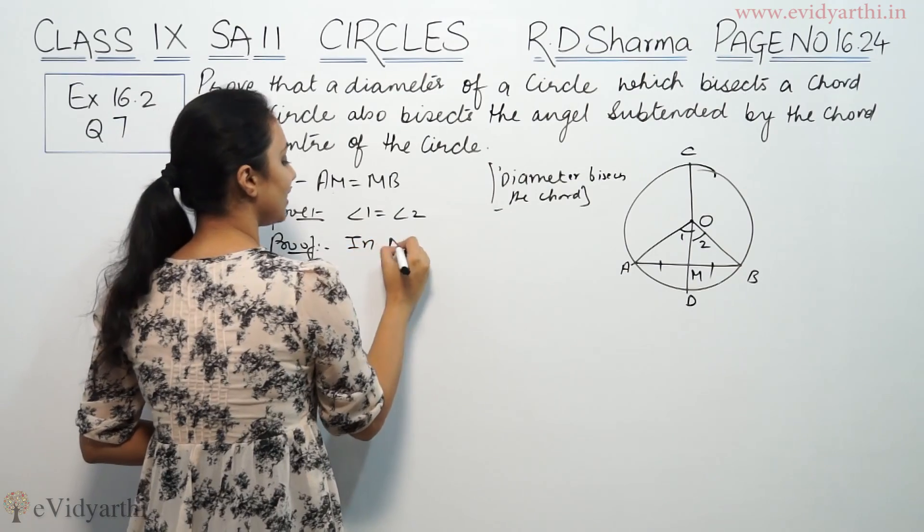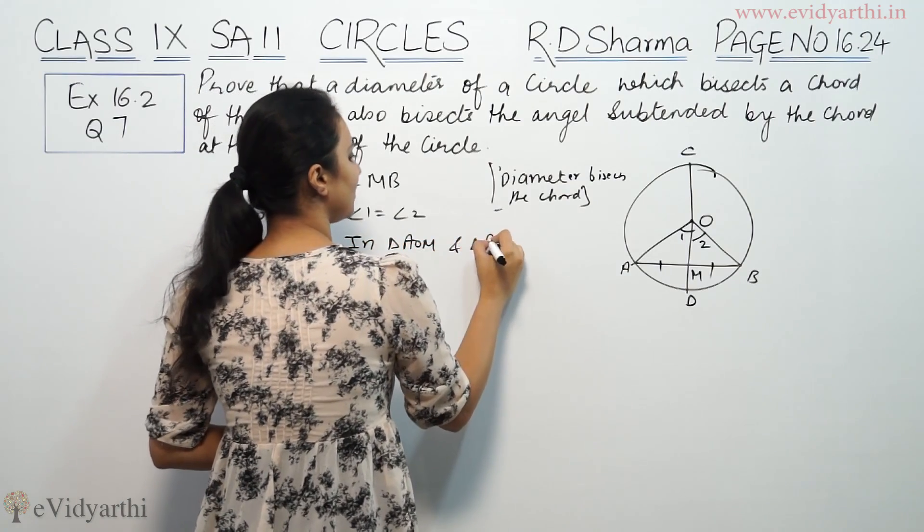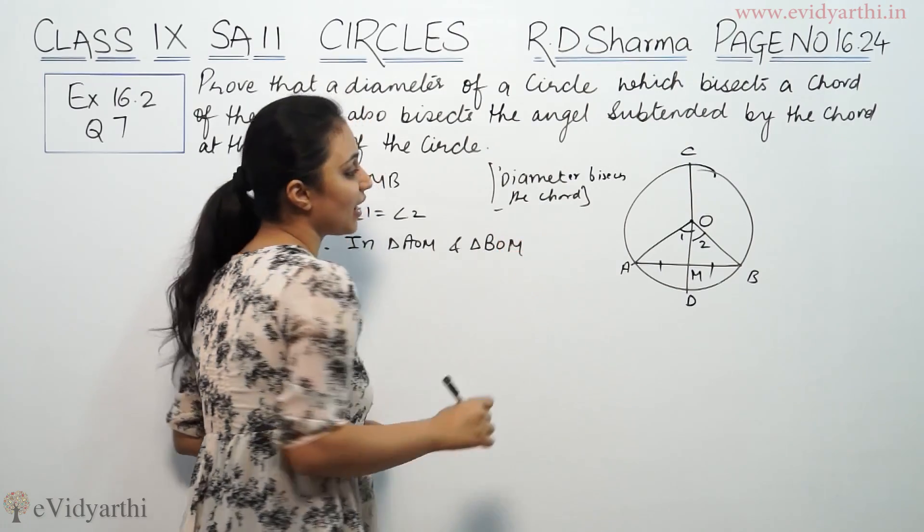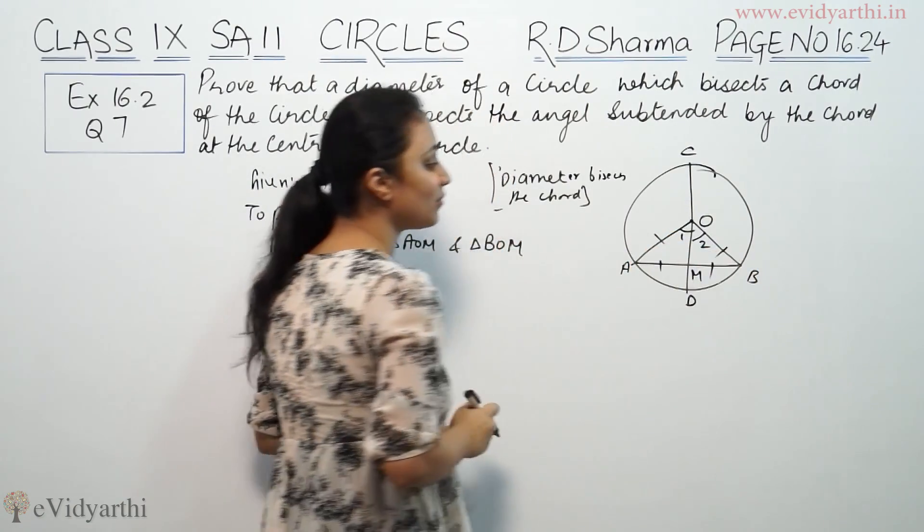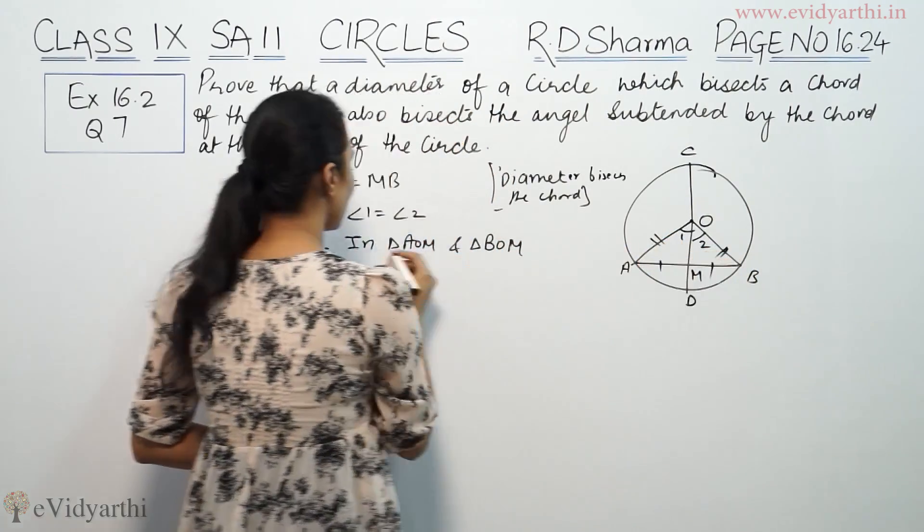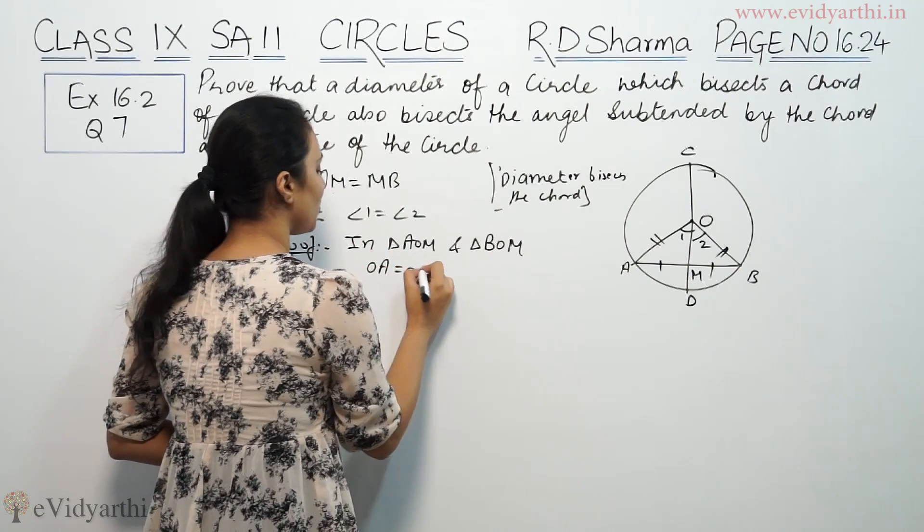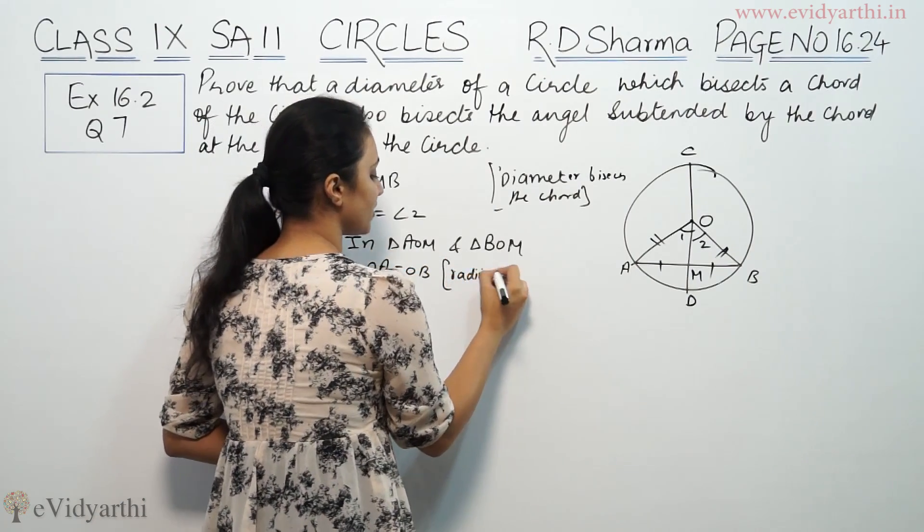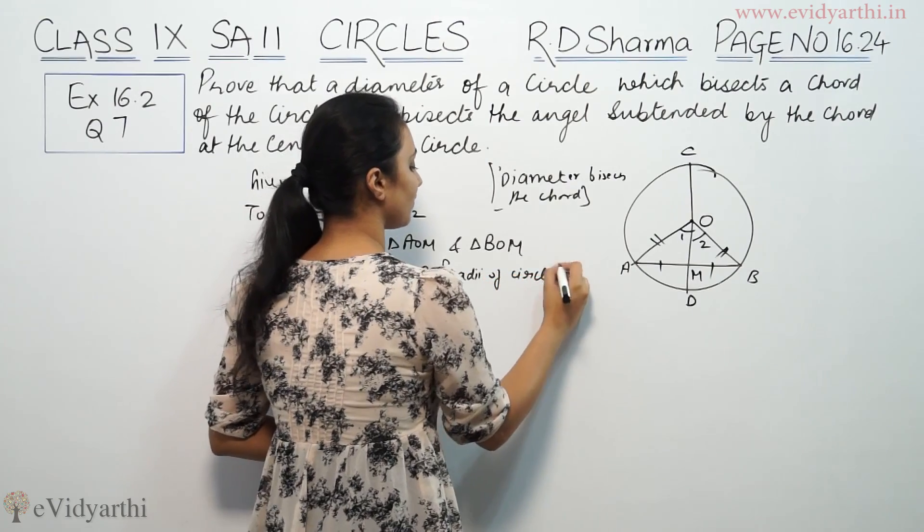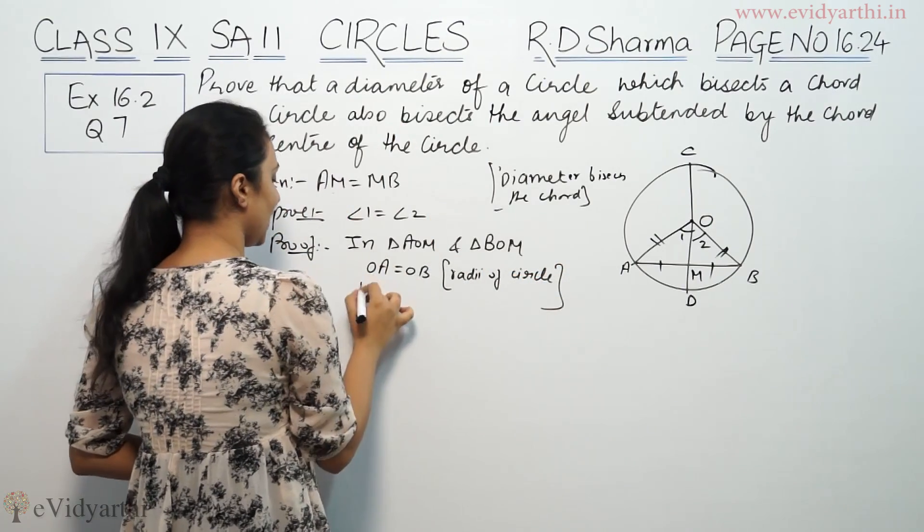In triangle AOM and triangle BOM, we have OA equals OB. This is the radius of the circle. And we have given AM equals MB.